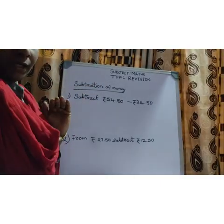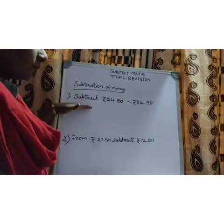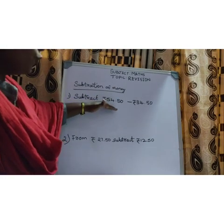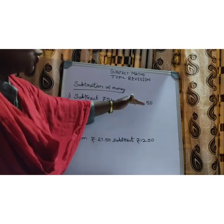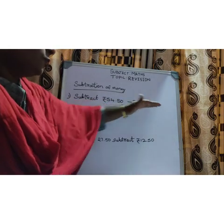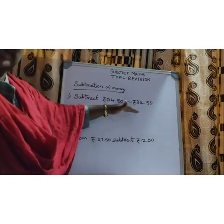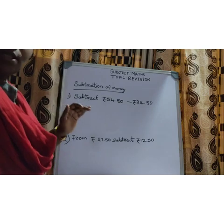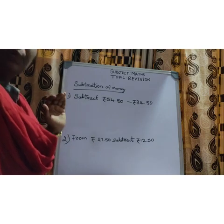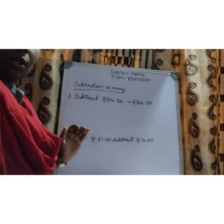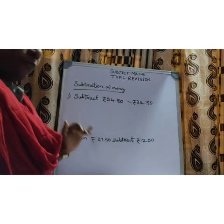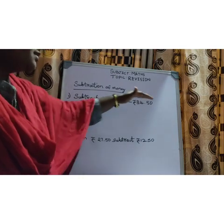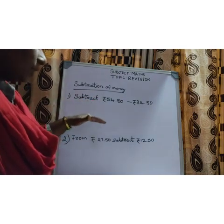Subtraction of money. In these two forms only the question will be. Subtract rupees 54 and 50 paise minus rupees 34 and 55 paise — here it is given directly. In subtraction always, the big number should come first. Write the first number, write the minus sign, and the second number comes below so you can subtract.